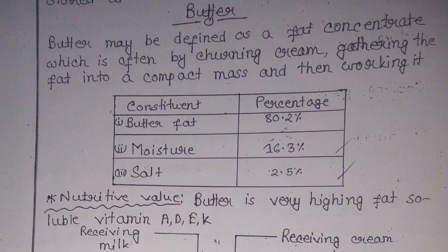Butter may be defined as a fat concentrate which is obtained by churning cream, gathering the fat into a compact mass, and then working it. Its constituents and percentages: butter fat is 80.2 percent.